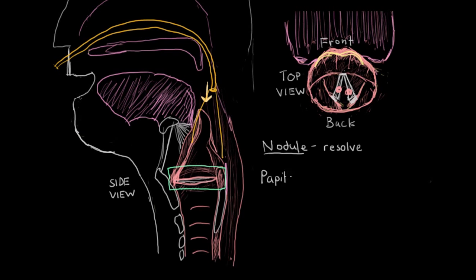Another type of growth is known as a papilloma, and if it's on the larynx, it's called a laryngeal papilloma — shown here in yellow. Papillomas can appear on the vocal cords as a lump and may have an irregular, bumpy border, whereas nodules are mostly just a small round node. Papillomas can grow along the vocal cord, and while they are a benign, non-cancerous growth, they do not resolve on their own. In fact, they'll continue to grow unless cut out or excised.